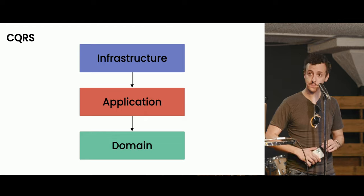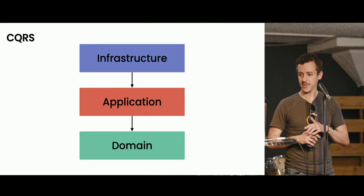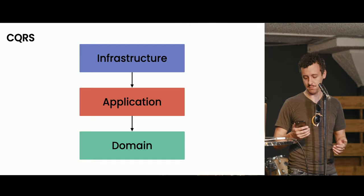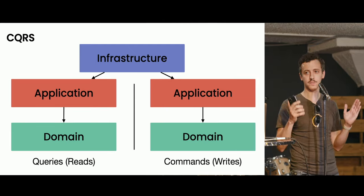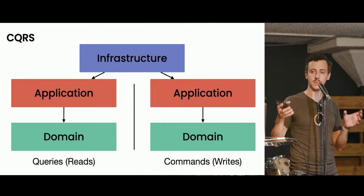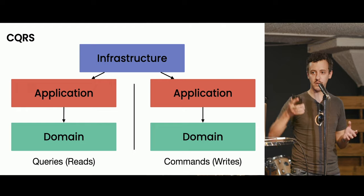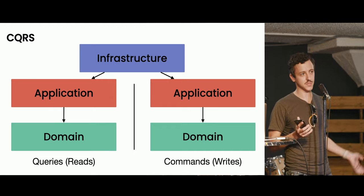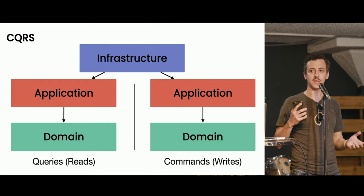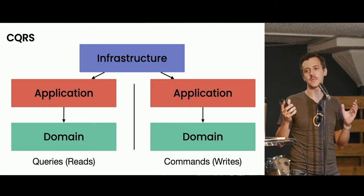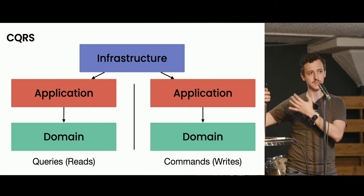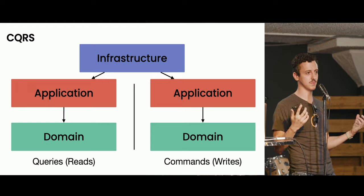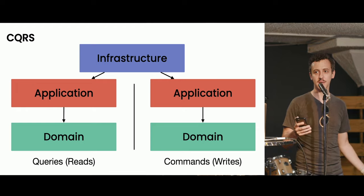The next pattern is CQRS — maybe one of the most misunderstood and misapplied architecture patterns. The basic idea is that you separate your code into two distinct domain models, or two code paths: one for writes — things written to the database or with side effects — and one for reads — just pulling data out of your system. In some cases these have very different requirements, and you end up with complexity in your domain model that is only really needed for the writes or commands, so this frees you to drastically simplify the read side.